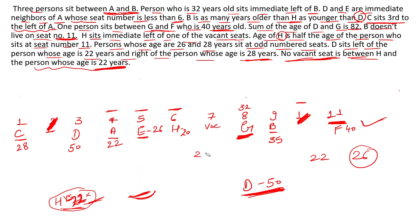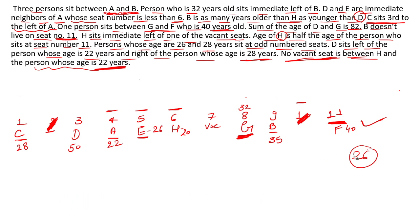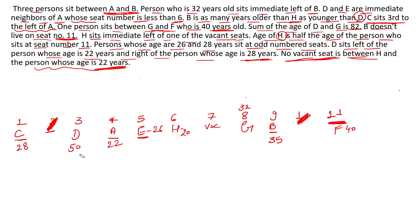The final arrangement (Case 2): Seat 1=C(28), Seat 2=Vacant, Seat 3=D(50), Seat 4=A(22), Seat 5=E(26), Seat 6=H(20), Seat 7=Vacant, Seat 8=32-year-old(B? no — 32 is on seat 9 = G(32)), Seat 9=G(32), Seat 10=B(35)→Vacant(10), Seat 11=F(40). All ages: F=40, B=35, G=32, H=20, E=26, A=22, D=50, C=28. All questions from this puzzle can now be answered. See you in the next session — take care everyone.